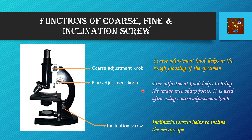After that comes the fine adjustment knob or fine adjustment screw, which helps to bring the image into sharp focus according to the focal length. It is used after using the coarse adjustment knob. That means a specimen is placed on the stage, the coarse adjustment knob helps to focus it so we can see it through the eyepiece, and then to see that specimen in a far sharper way we use the fine adjustment knob.